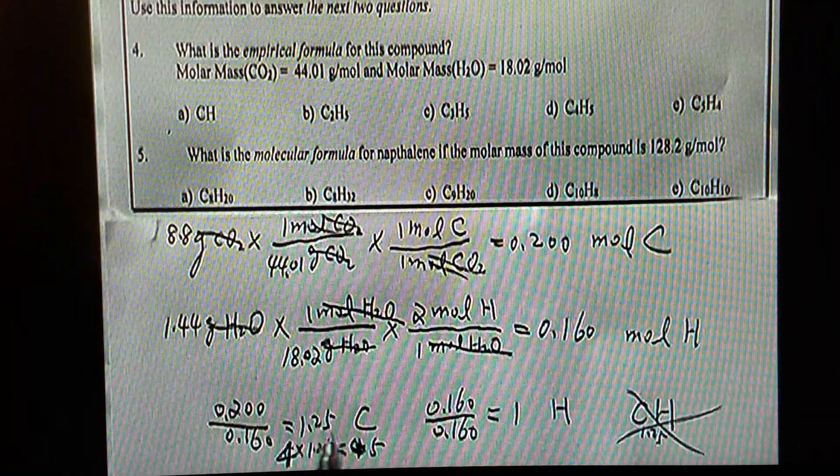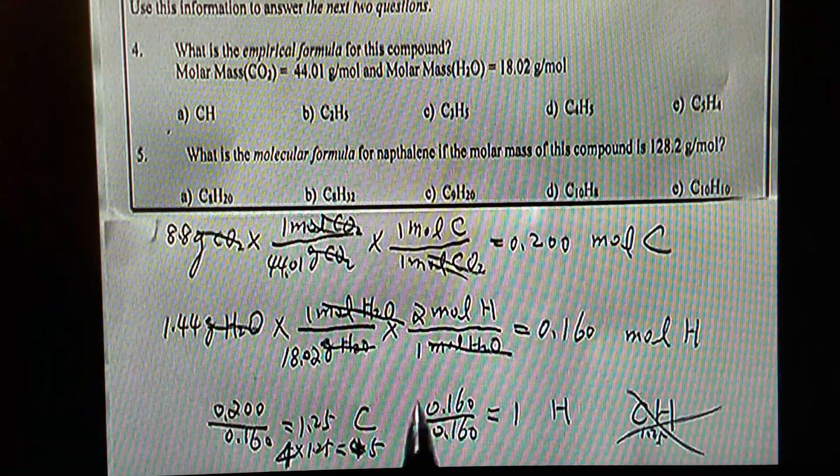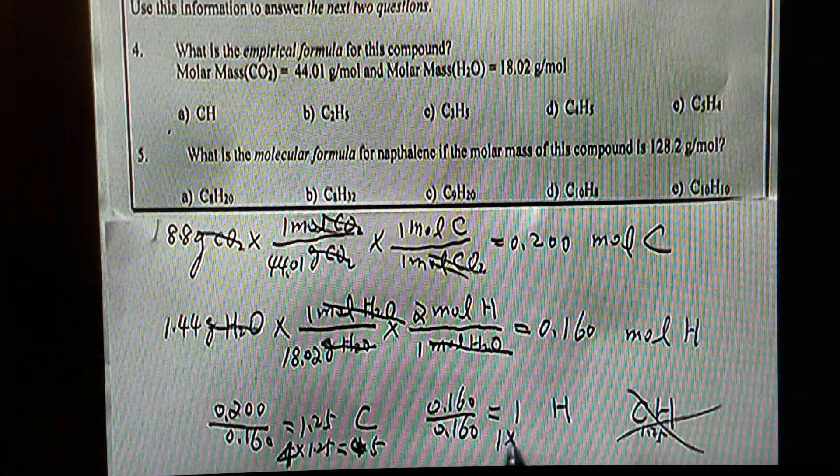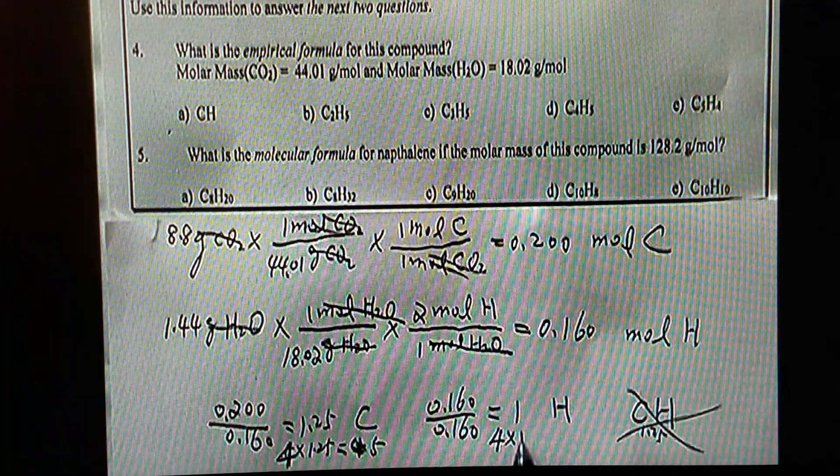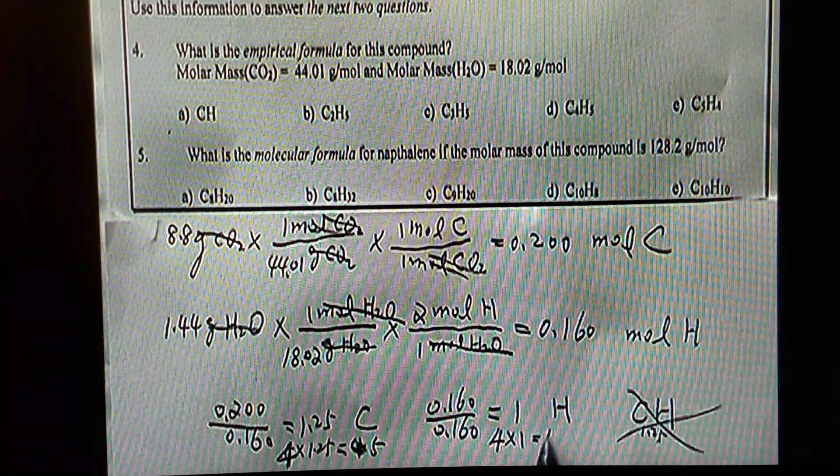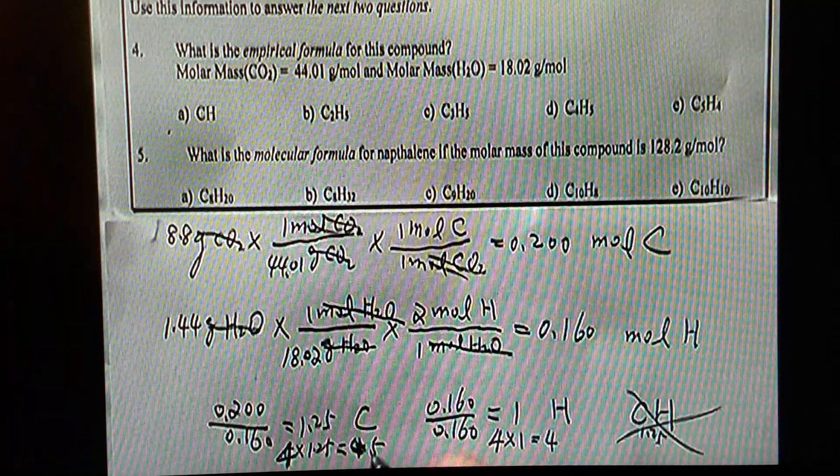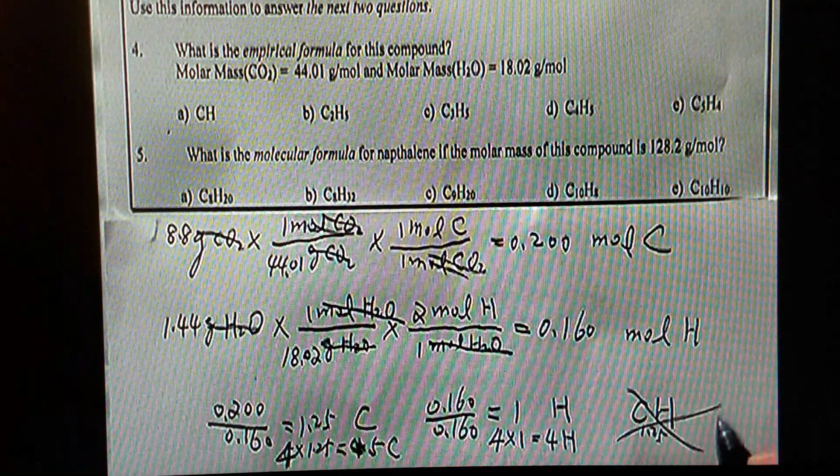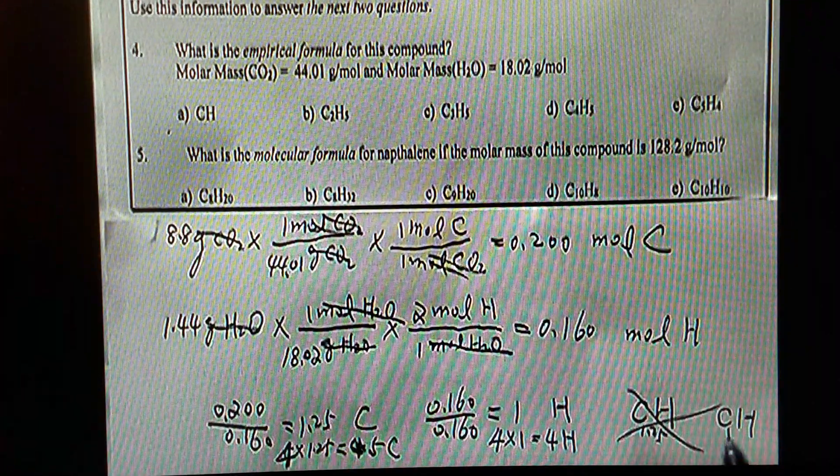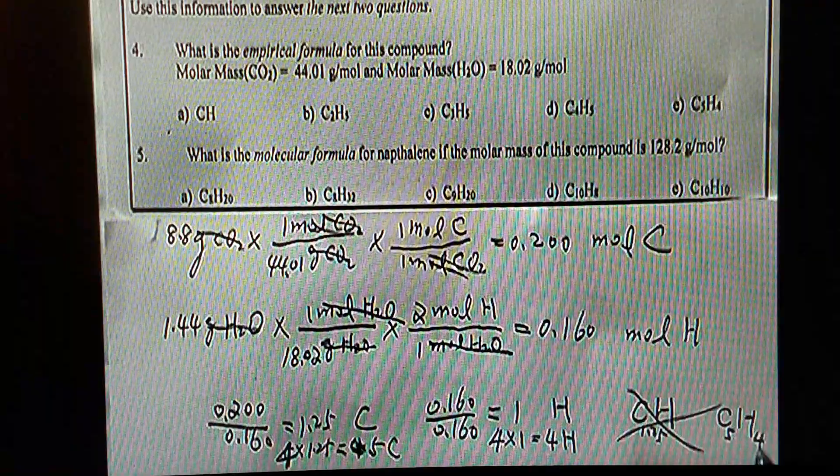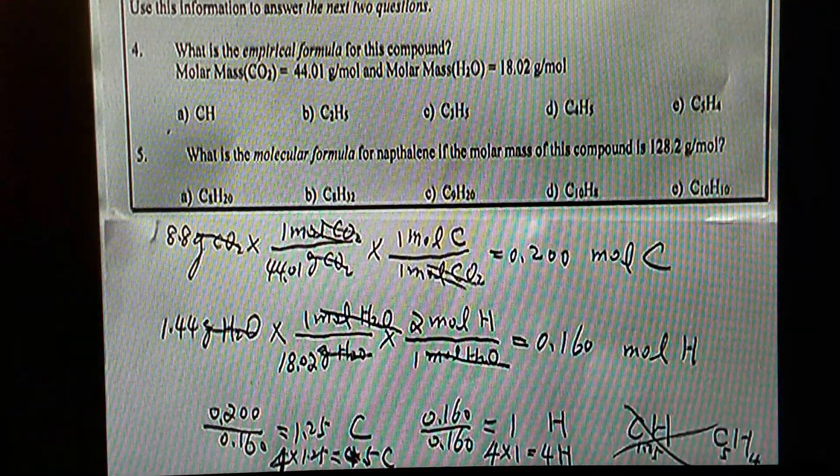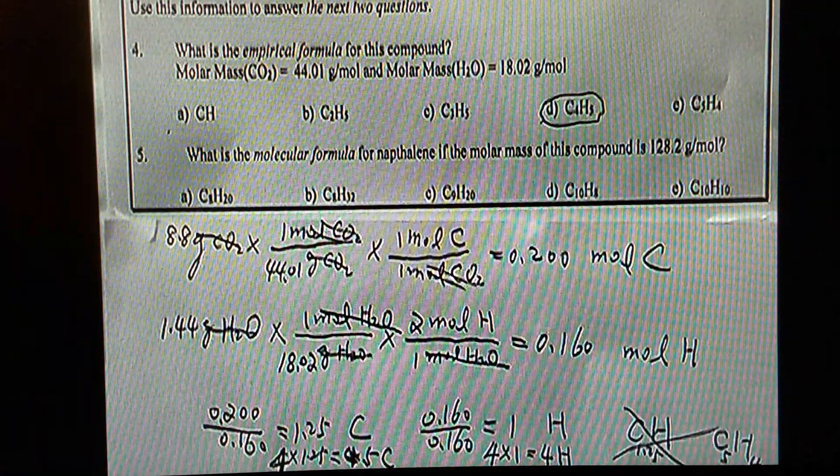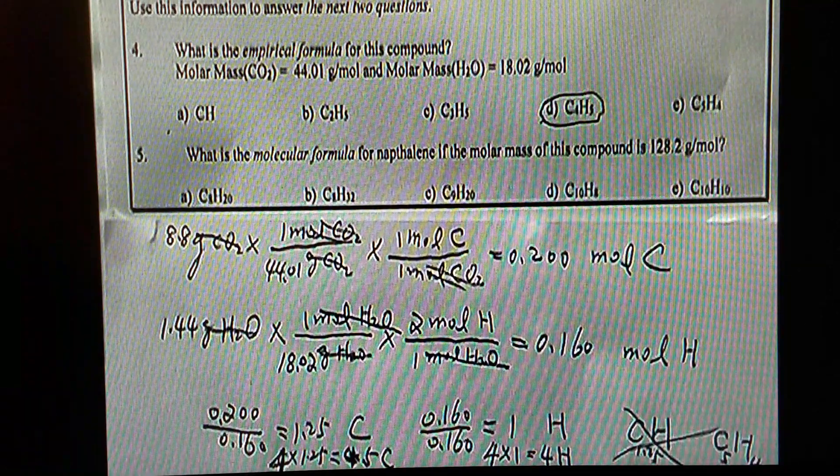And you have to do the same for this one, for hydrogen. Hydrogen should be 1 times 4. Again, times just 1, that gives us 4. Therefore, you have now 5 carbon and 4 hydrogen. C5H4, that should be the correct answer. That's for question number 4.